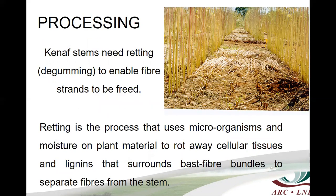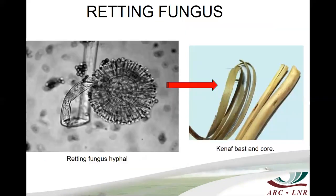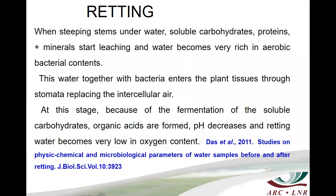Kenaf stems need retting or degumming to enable fiber strands to be freed. Retting is the process that uses microorganisms and moisture on plant material to rot away cellular tissues and lignins that surround fiber bundles to separate fibers from the stems. This photo shows the retting fungus, and on the right hand side you can see the separation between the Kenaf bast and core.